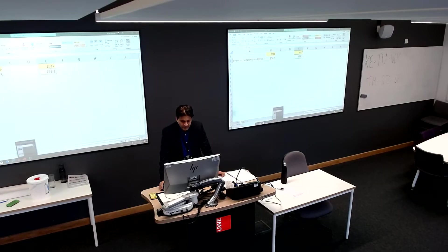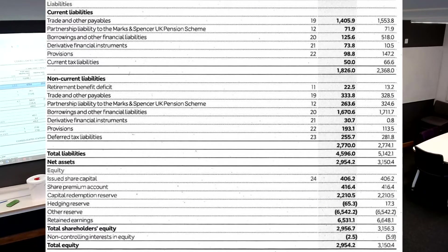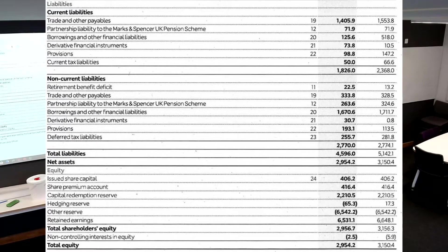The second figure needed is share capital and reserves, found in the balance sheet — our statement of financial position. The very last area of the balance sheet is the equity area. Share capital and the rest are all called reserves, so when it says share capital and reserves, that means equity. We need to pick the total equity figure and place it in our formula.